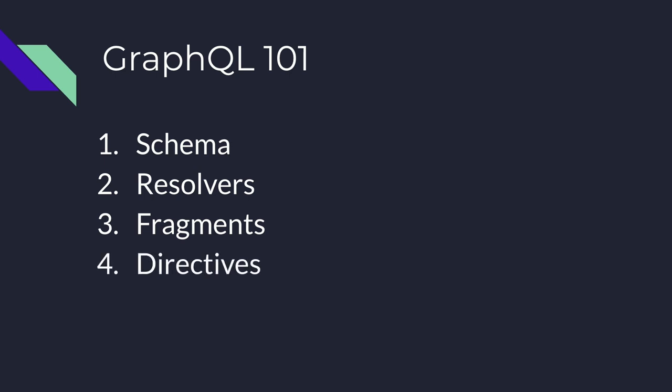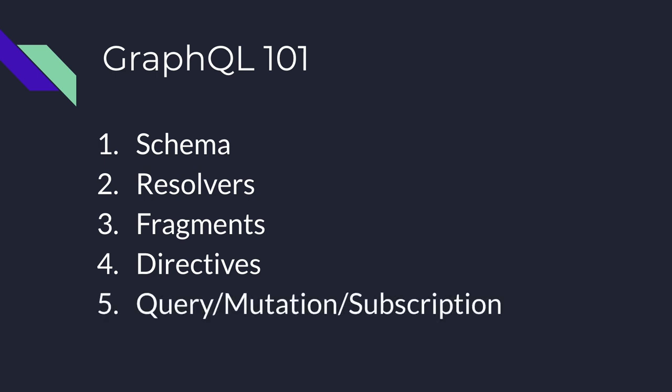Directives give you a way to pass more information to the GraphQL executor. For example, if you want to deprecate a field, you can write @deprecated in front of that field and it won't be publicly accessible in the documentation. Then there are three publicly exposed parts: query, mutation, and subscriptions. Querying is used for reading data, mutations for making changes to data, and subscriptions for subscribing to data — similar to WebSockets.